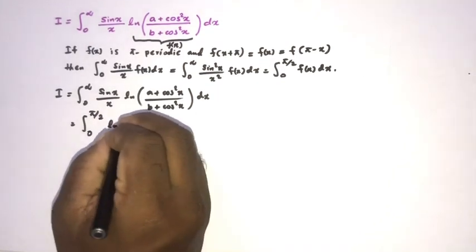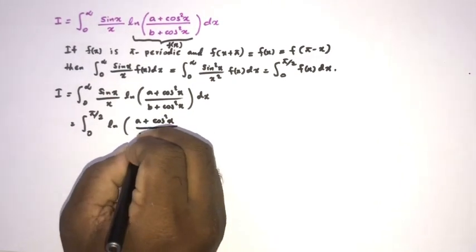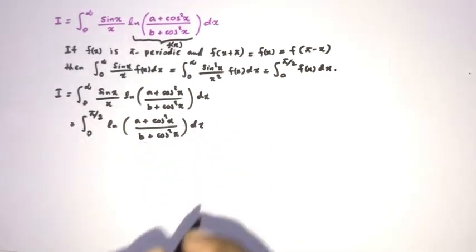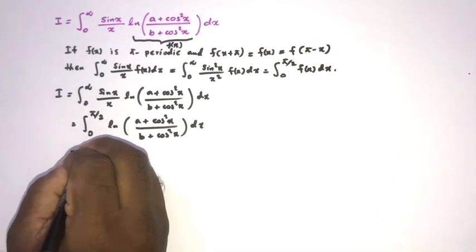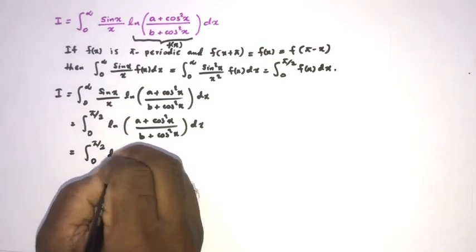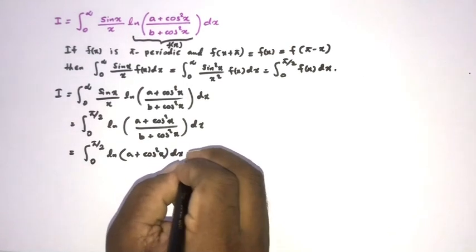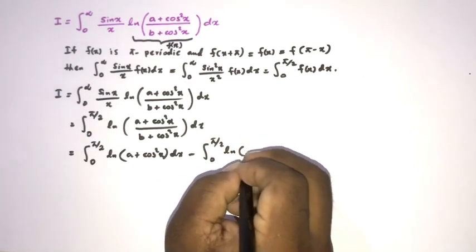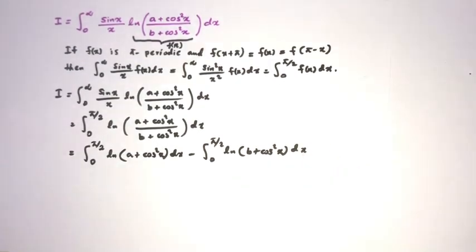Then we can apply the Lobachevsky formula. According to the property of the natural log, we can split this into two integrals: the integral from zero to pi/2 of ln(a + cos²x) dx, minus the integral from zero to pi/2 of ln(b + cos²x) dx.